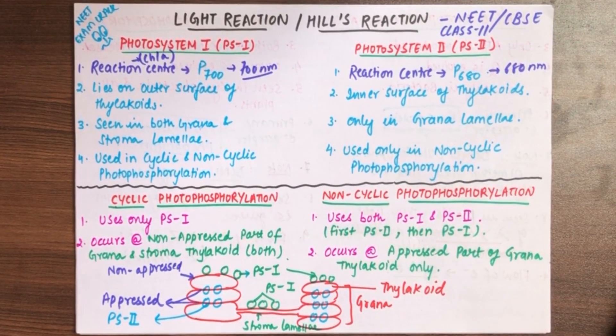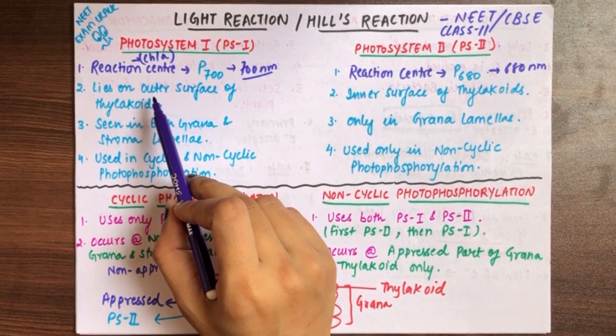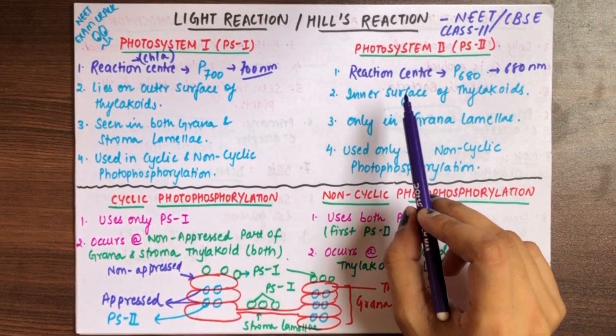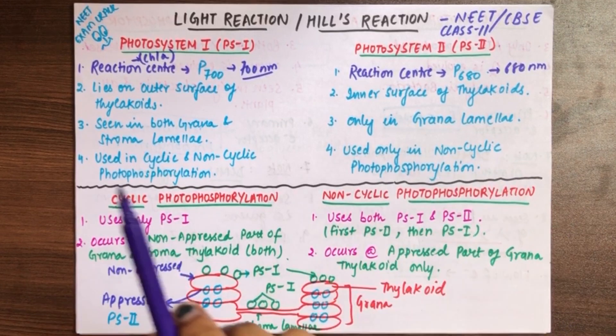So why they are known as P700 and P680? It is the reason that which wavelength of light is absorbed. Next, see, photosystem 1 lies on the outer surface of thylakoid, and photosystem 2 lies on the inner side of thylakoid.